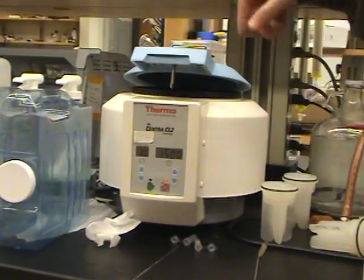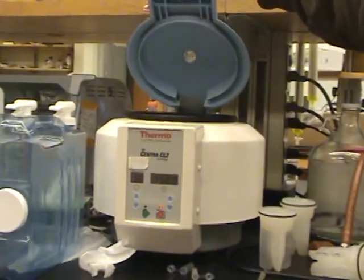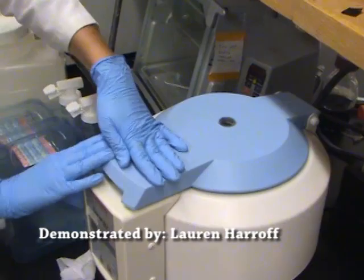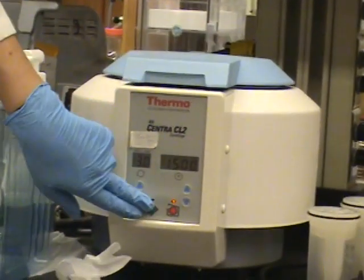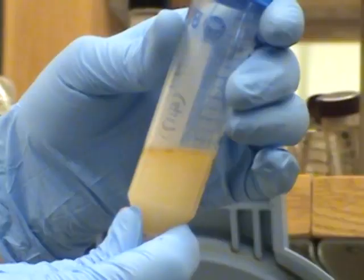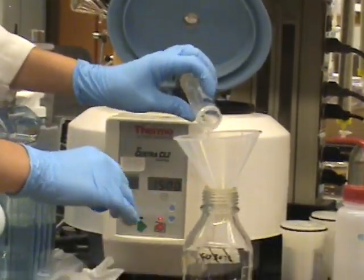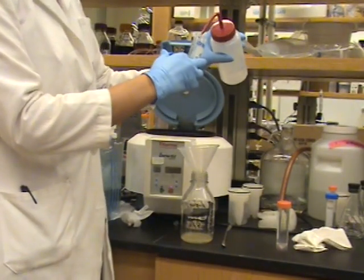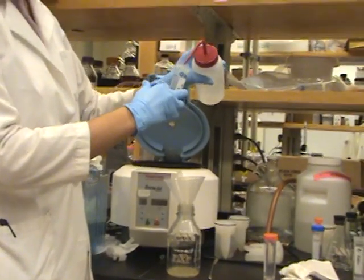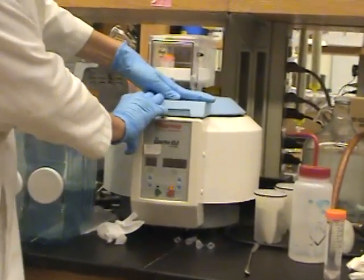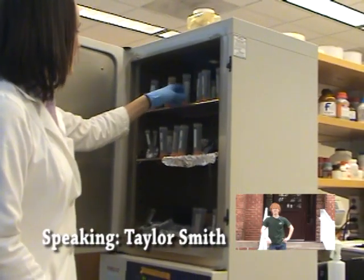Place the collection tube into the centrifuge and balance the weight. Run the machine at 3,000 RPM for 15 minutes. The centrifuge separates the algae cells or biomass from the supernatant medium. The medium is discarded. Wash the walls of the container with water and centrifuge again. The algal biomass is then dried in an oven.